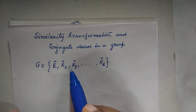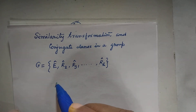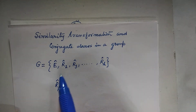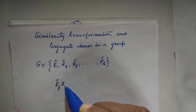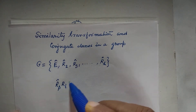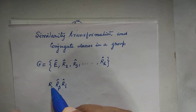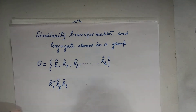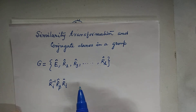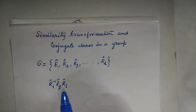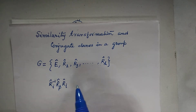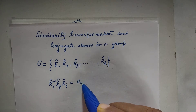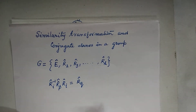Now take any symmetry operator from this list, say Rp, and using any other symmetry operator, say Ri, carry out a symmetry multiplication: Ri on this side and Ri inverse on this side — you can do it in the reversal way also. If by carrying out this symmetry multiplication the result is found to be, say Rq, then what do we expect?